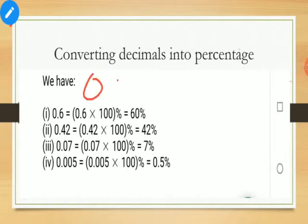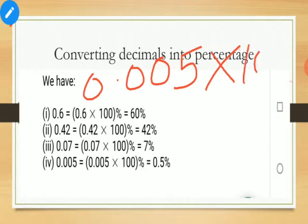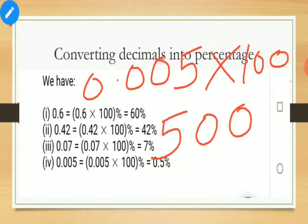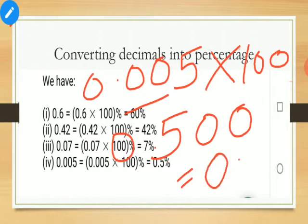One more example: 0.005 — multiply by 100. So 5 ones are 5, then put two zeros to get 500. Zeros before a number are useless, so you will not count these. Now count after how many decimal places the decimal is placed in the original number — after 3 decimals. So place the decimal after 3 places, giving 0.5 percent.